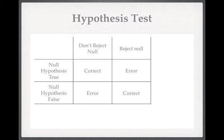So we've set up our study, we've got some data, and we're doing our hypothesis test. Either the null hypothesis is true or it is false — we don't know that, and that's why we're doing our hypothesis test. Suppose the null hypothesis is true and we do our statistical test and end up not rejecting it — well that's great, we've done the right thing. Or suppose the null hypothesis is false and we reject it — that's great too. If we get the situation where the null hypothesis is true but we reject it, then that's an error. If the null hypothesis is false but we don't reject it, that's an error as well.